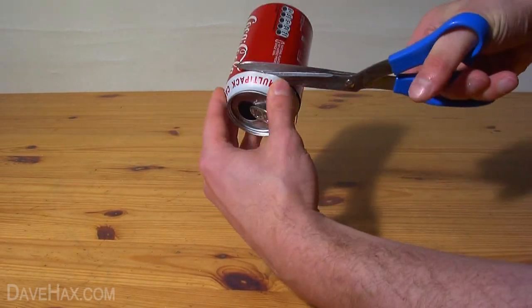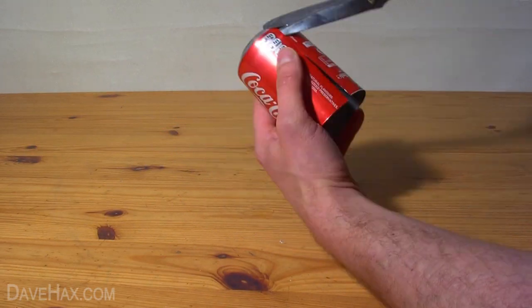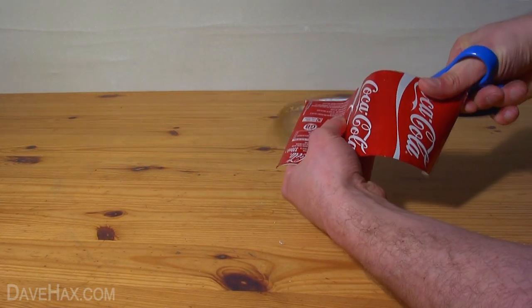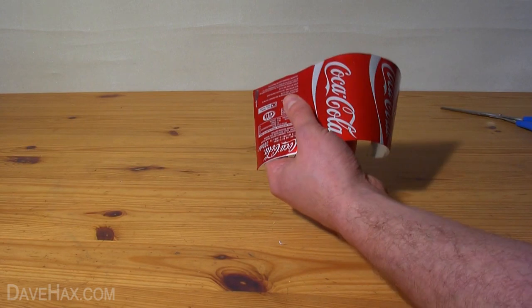Start by using a knife and a pair of scissors to cut the top and bottom off your Coke can and turn it into a flat sheet of tin. Be very careful not to cut yourself, you might want to wear some safety gloves.